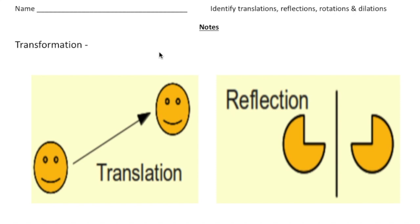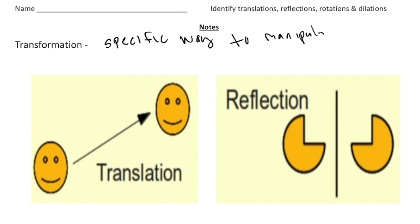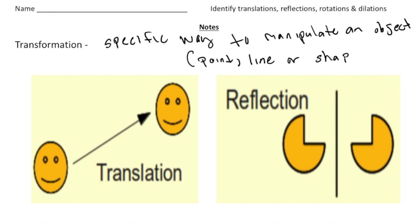So what exactly is a transformation? A transformation is a specific way to manipulate an object. This object could be a point, line, or shape.